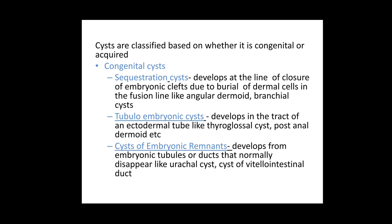The second variety is tubulo-embryonic cysts — congenital cysts which develop in the tracks of an ectodermal tube, like thyroglossal cysts and post-anal dermoid cysts. The third variety is cysts of embryonic remnants, which develop from embryonic tubules or ducts that normally disappear, such as a cyst of the urachus, cyst of the vitello-intestinal duct, and cyst of the Wolffian duct.